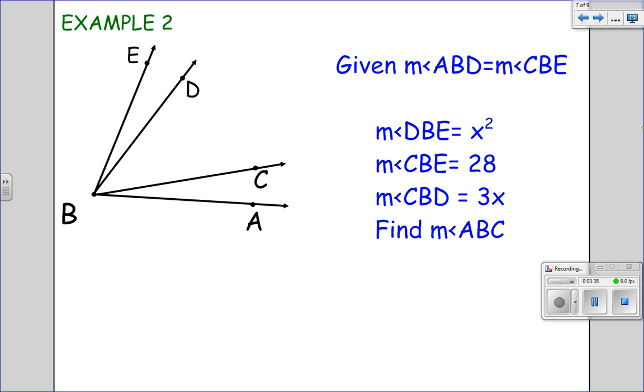Alright, let's give it a try here. So we have angle ABD, which is the bigger angle, which includes ABC and CBD, and angle CBE are congruent to each other. DBE is this section right here. CBE is this section right, the whole thing. And then CBD is this section here.